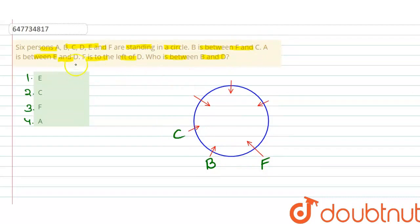Now, A is between E and D. So, A is between E and D, E and D. And F is to the left of D. F is to the left of D. So, given configuration is this.